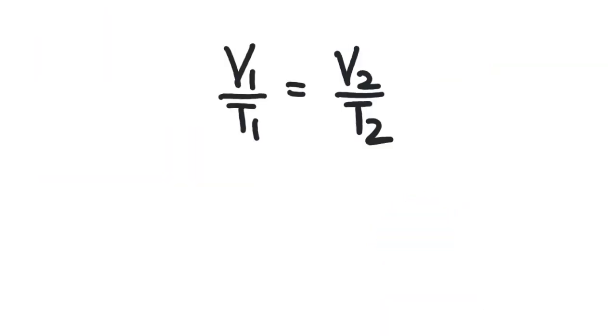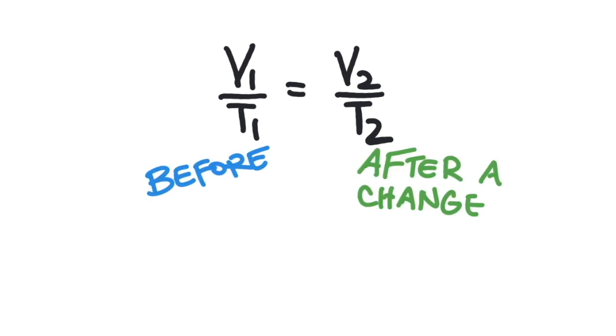Using an equation, Charles' Law could be described like this. V1 over T1 equals V2 over T2. Basically, this is showing the relationship between two sets of conditions. The before conditions represented by the ones, and then after some change occurs, the conditions are represented by the twos.